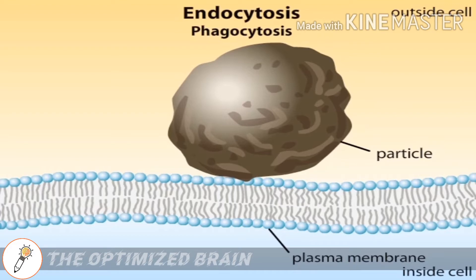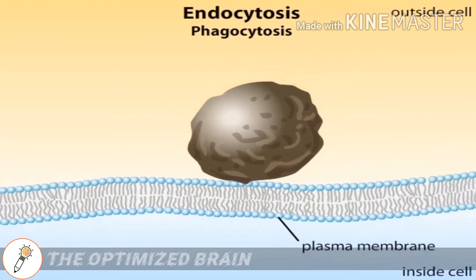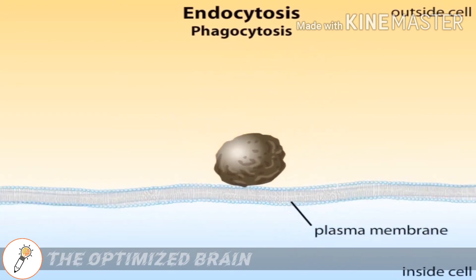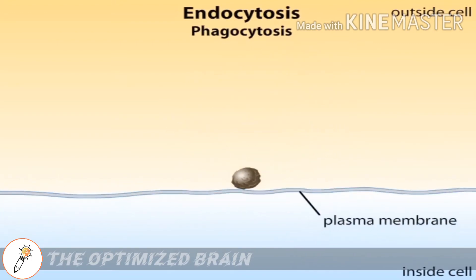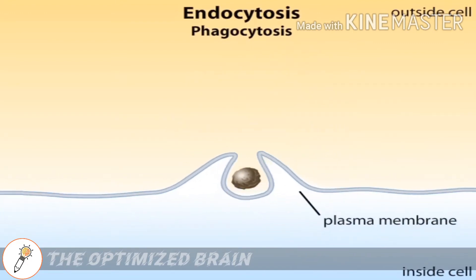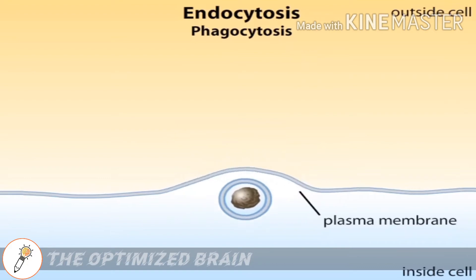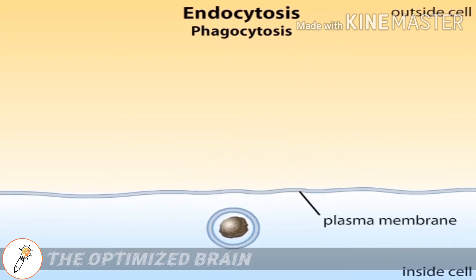Phagocytosis is one of three types of endocytosis. In phagocytosis, which means cellular eating, part of the plasma membrane engulfs the particle.